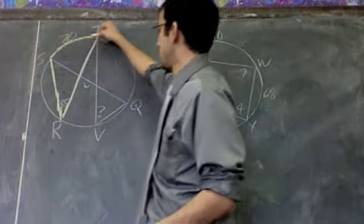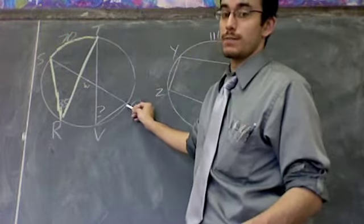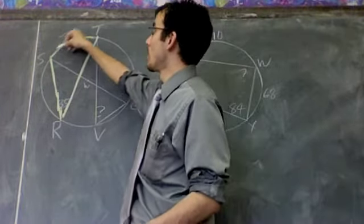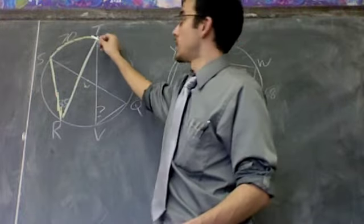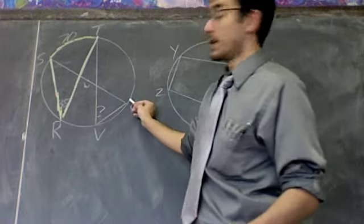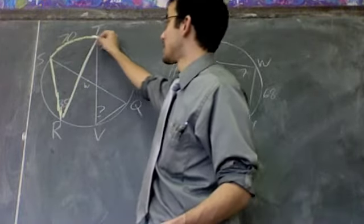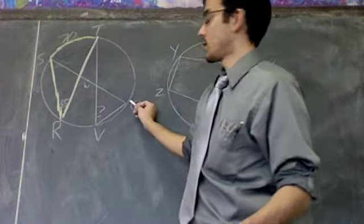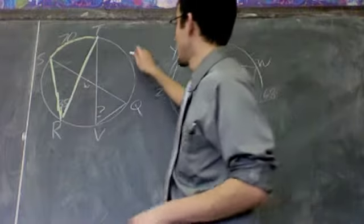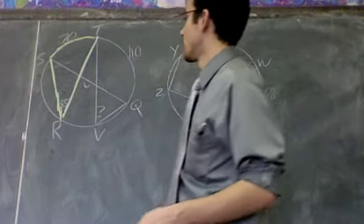So from S to T to Q, that's 180 degrees. I already know that ST is 70 degrees. So I know that TQ should be the rest of the semicircle. 180 minus 70 will give me the rest. 180 minus 70 is 110. So I know that TQ is 110 degrees.